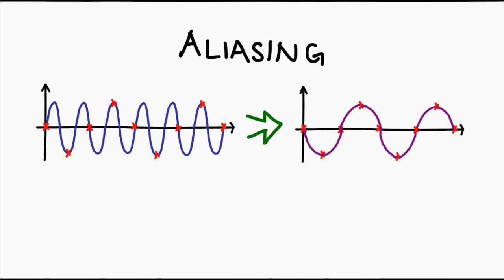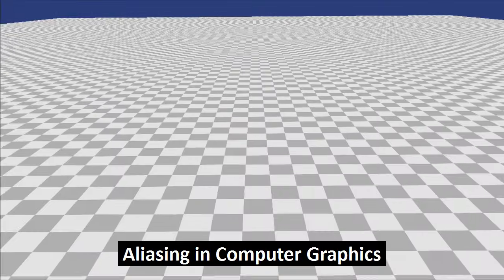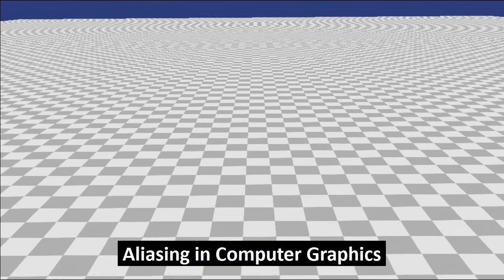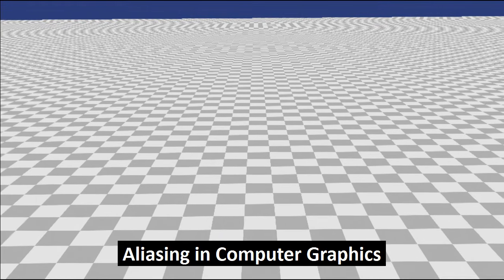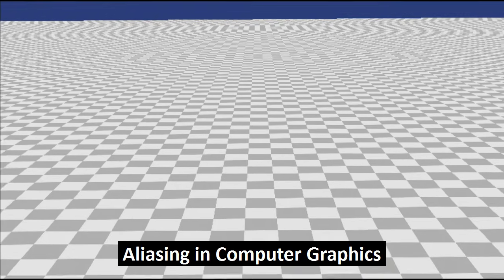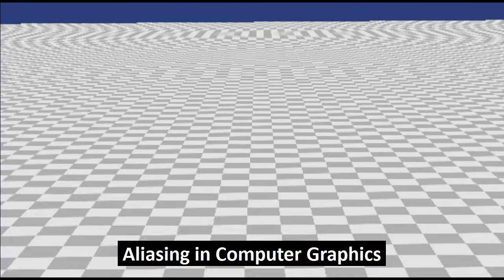A simple way to describe aliasing would be: if I were to sample any signal at too low a sampling frequency, I am unable to accurately represent that frequency, and I end up getting a lower frequency instead. While we've done this entire video in terms of sound, aliasing can happen anytime sampling is used. For example, image rendering — see how the checkerboard pattern over here appears to sort of merge together? Well, that's aliasing.